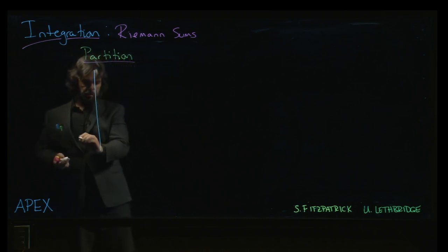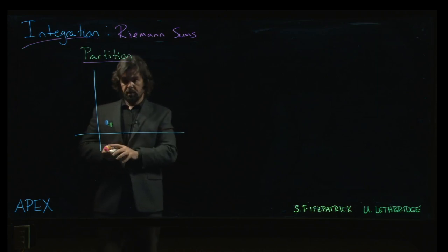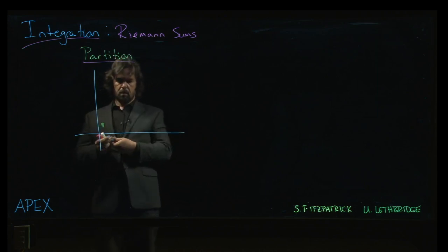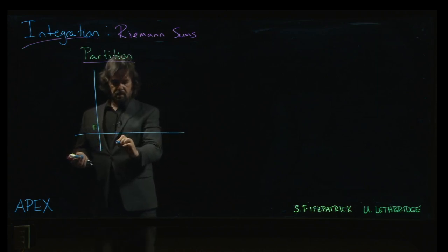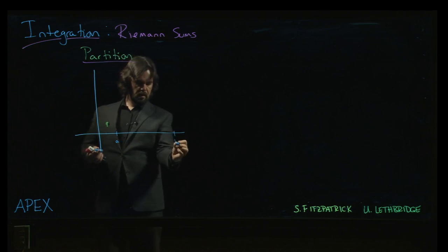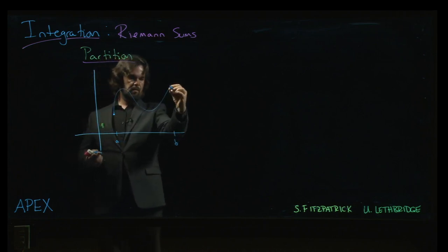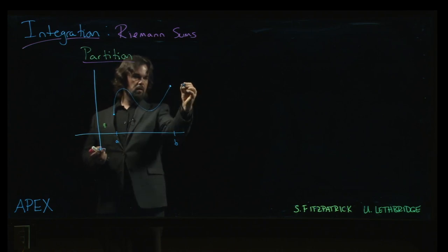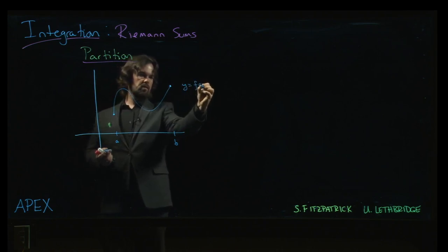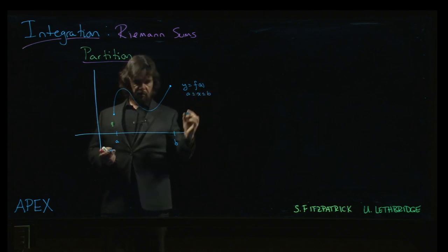So the idea is we've got the graph of some function starting at let's say a and ending at b. So we've got something like this right here is y equals f of x, x going from a to b.